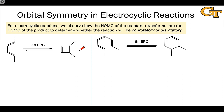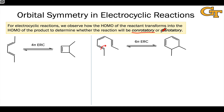For electrocyclic ring opening and closing reactions, we're interested in the geometry of the process. In ring closing, p orbitals that are originally parallel need to rotate into alignment so they point at each other and form the new sigma bonding orbital in the product. The question is: do the two p orbitals on either end rotate in the same direction — called conrotatory — or in opposite directions — called disrotatory? This depends on the number of electrons involved and whether the reaction is photochemical or thermal. Ring opening has the same rotational selectivity as ring closing since they are the microscopic reverse of one another.